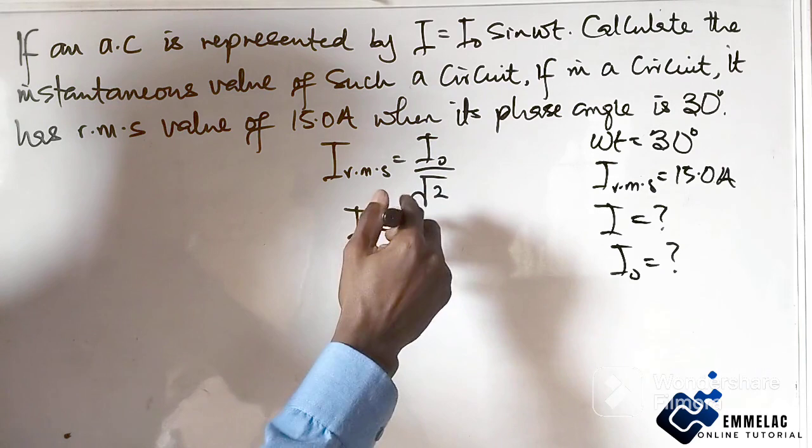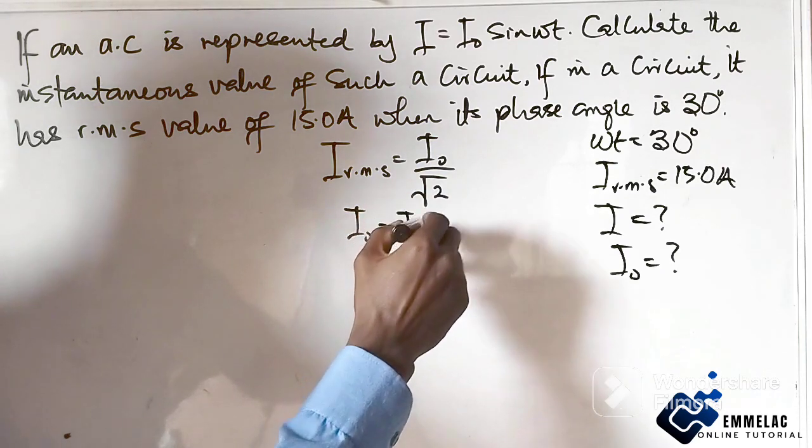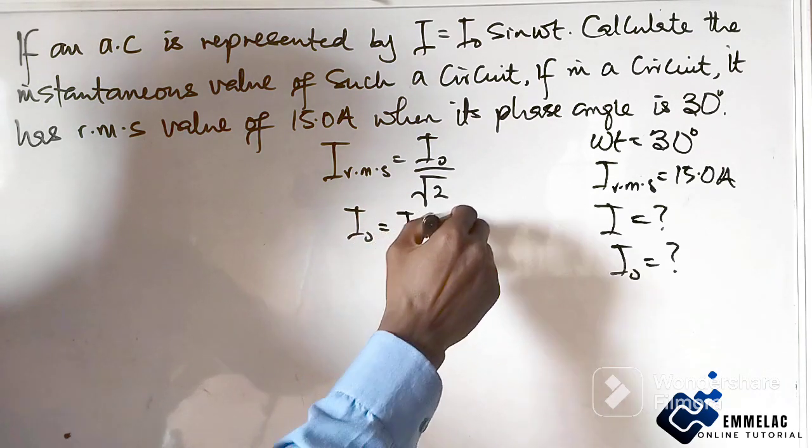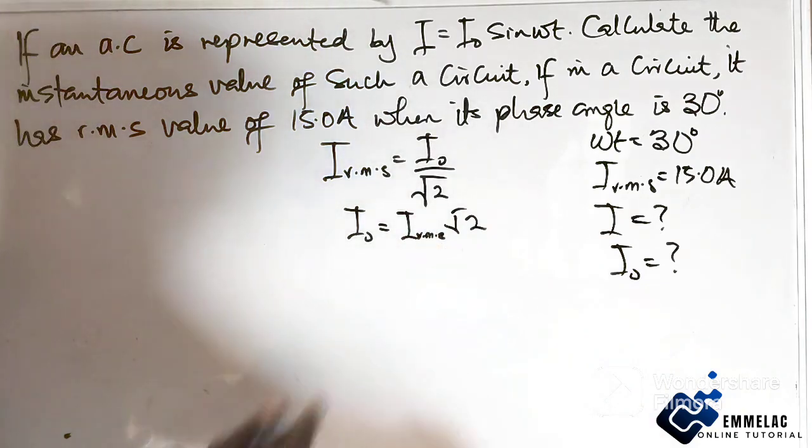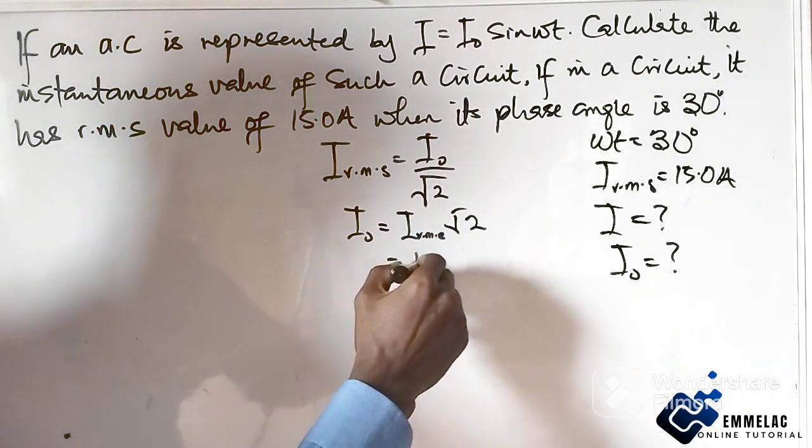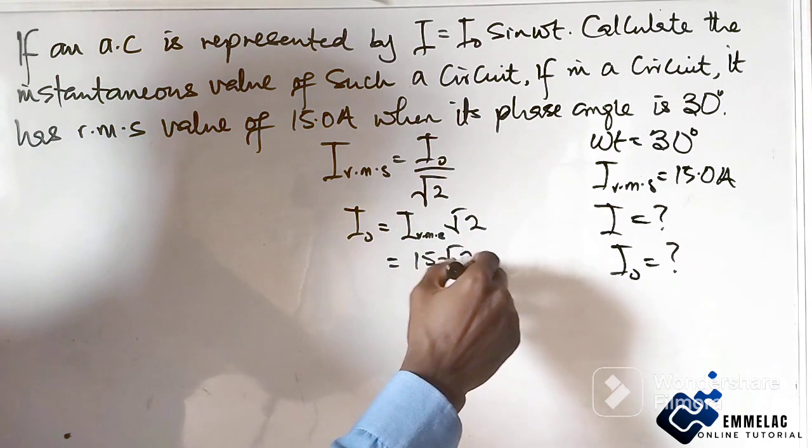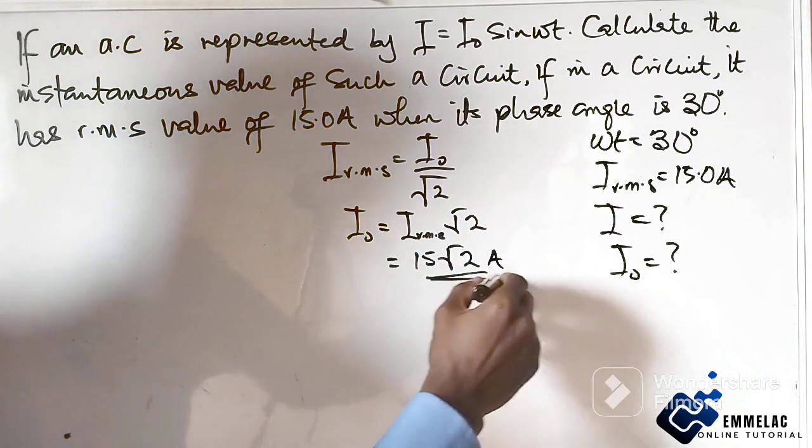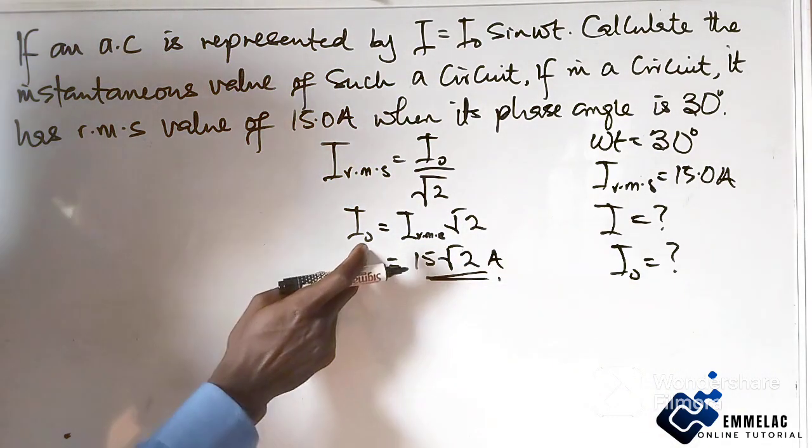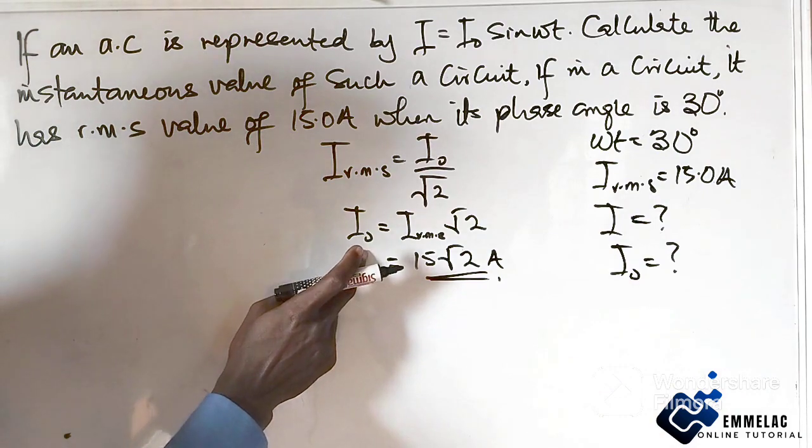Now, here we have I root mean square value times root of 2. And here we have 15 root 2 ampere. Now that we've gotten this, let us now find this instantaneous current.